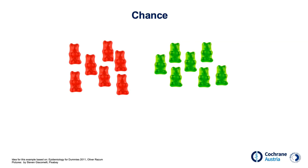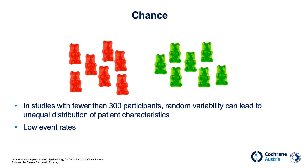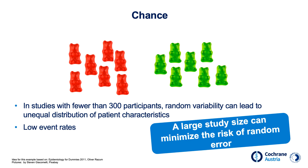Imagine you have a bowl of 500 green and 500 red gummy bears. You draw two samples, one with 10 gummy bears and one with 100. In the small sample, it can be easy to draw 8 green and 2 red gummy bears, but with 100 gummy bears you are probably much closer to the 50-50 distribution. In very small studies, despite randomization, the study groups may not be similar. A non-evidence-based rule of thumb states that studies with fewer than 300 participants are susceptible to random variability, and a low event rate is also prone to random error. A large study size can minimize random errors.